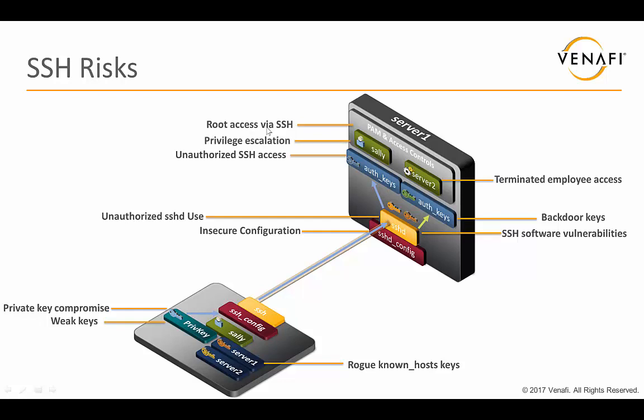One of the big issues with SSH is privilege escalation. Because administrators have privileged access through sudo or other mechanisms, they can leverage that to broaden access and gain a wider foothold on a system. Another key issue is port forwarding — SSH can be configured to do port forwarding, which allows people or systems to bypass firewall rules. That's something you really want to prevent. Finally, there's pivoting risk: if someone moves from a client to a server, and that server is trusted by another system, they can jump to that other system as well.